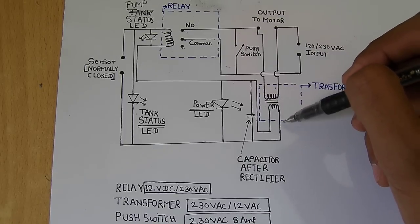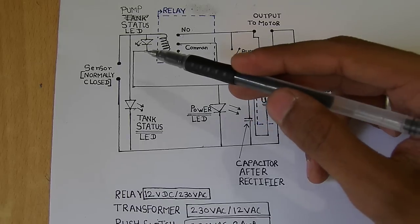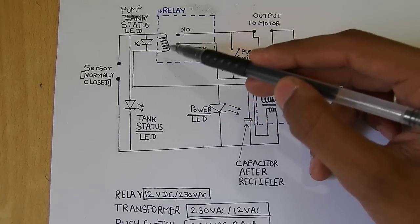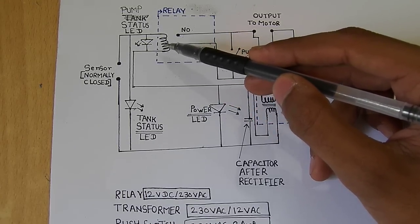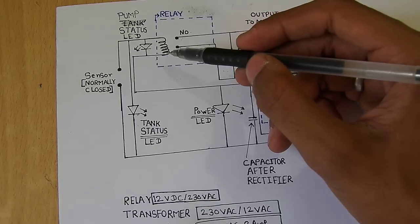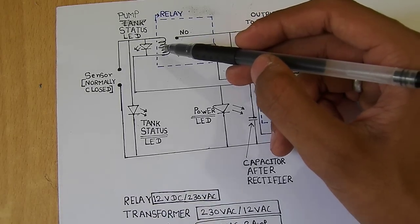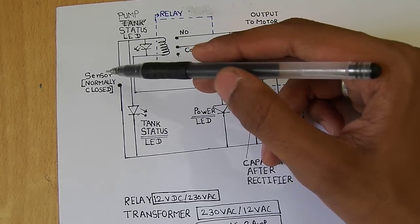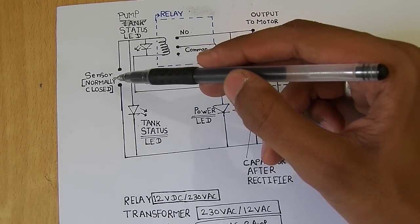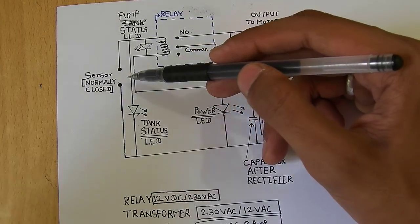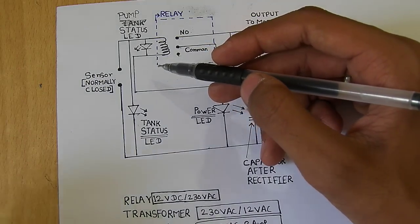There are certain conditions the relay will be powered up depending on this sensor. Now the sensor is normally closed, so normally closed means the tank is empty.